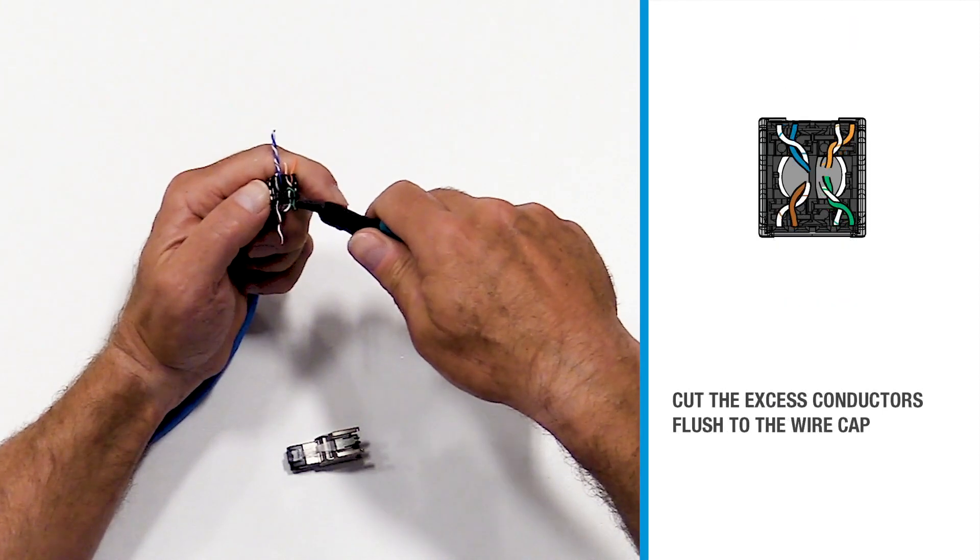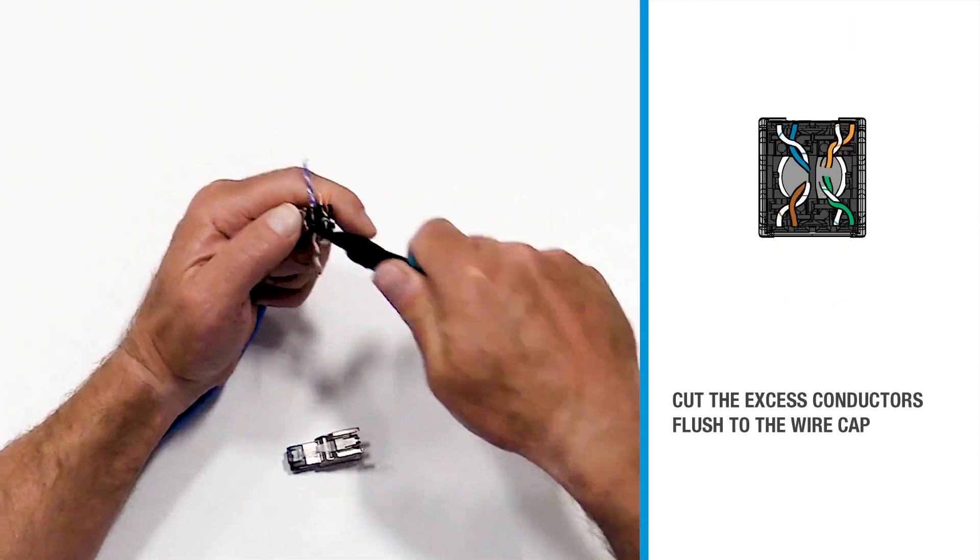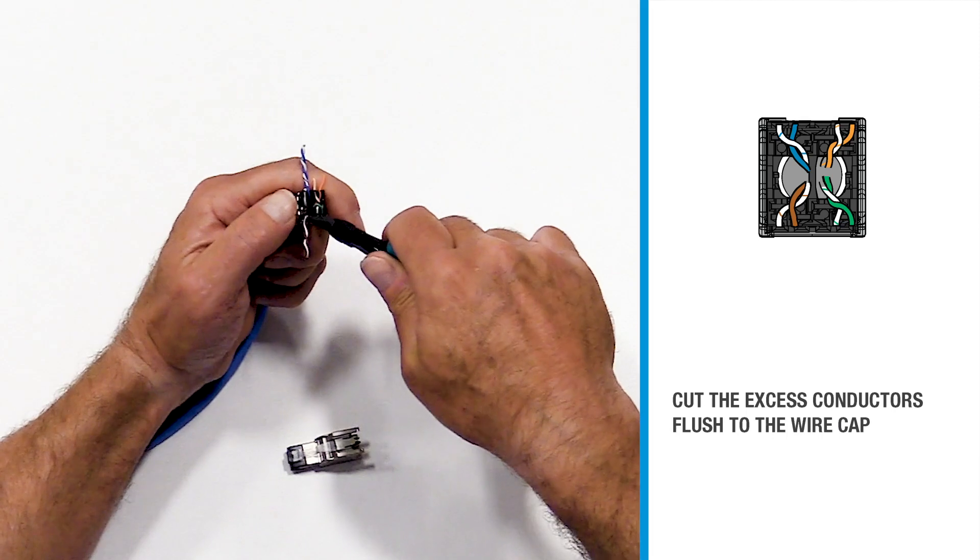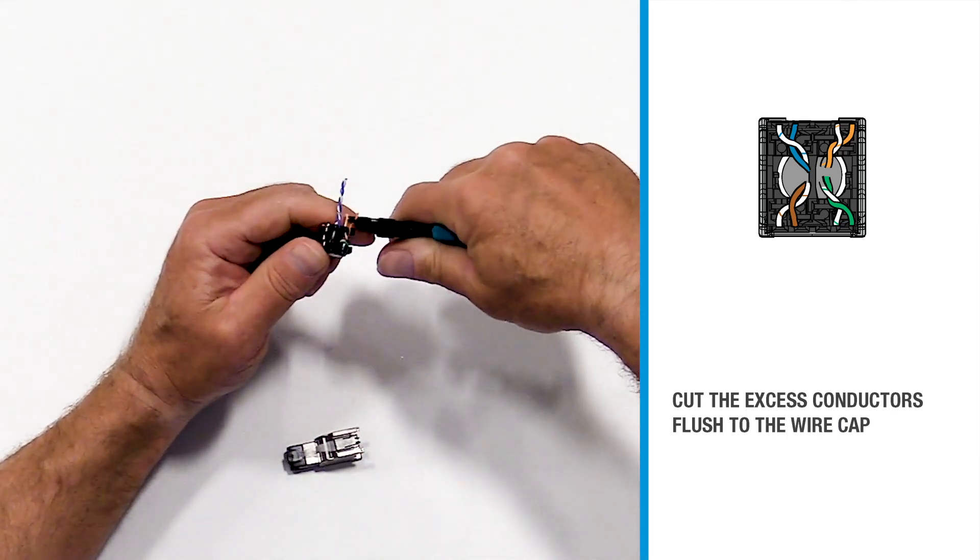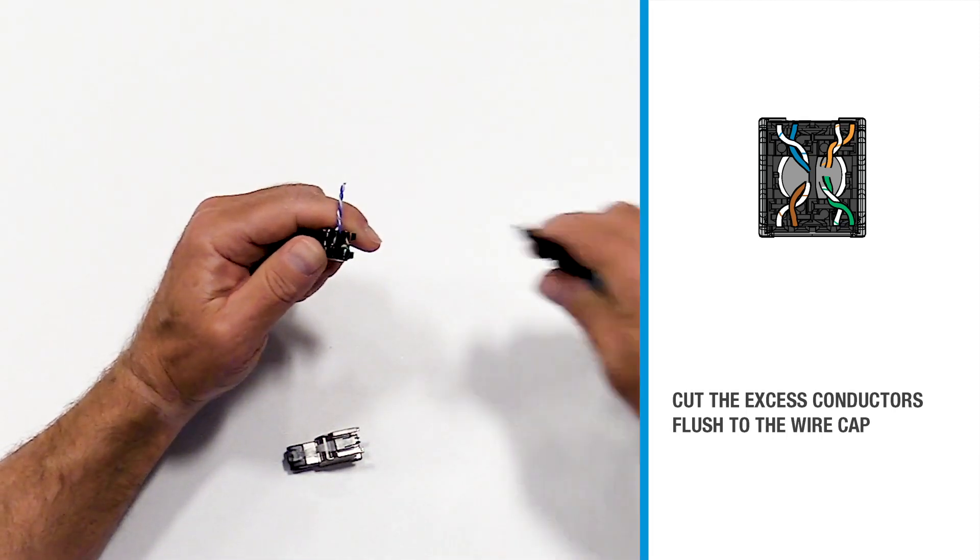Now, using our snips, we can cut off the excess flush to the wire cap.